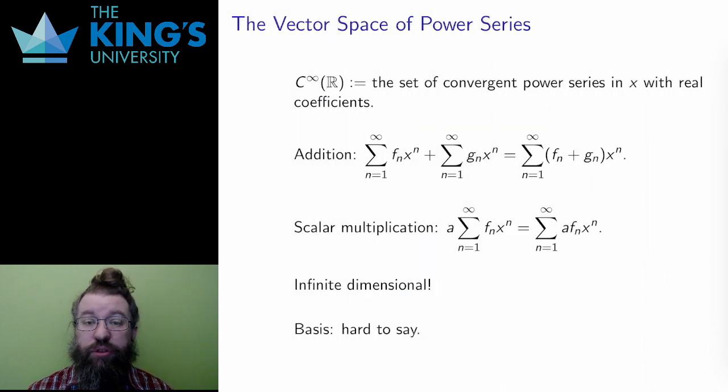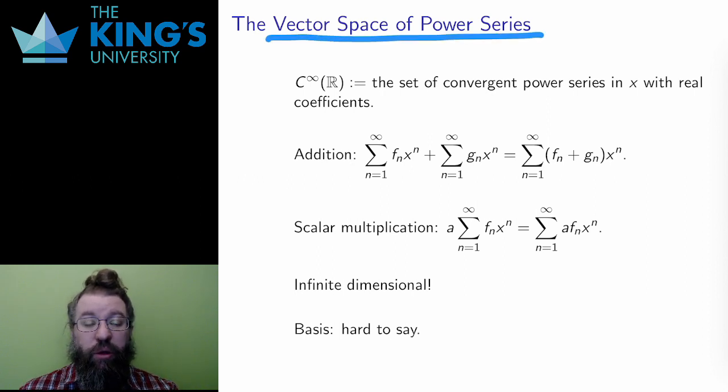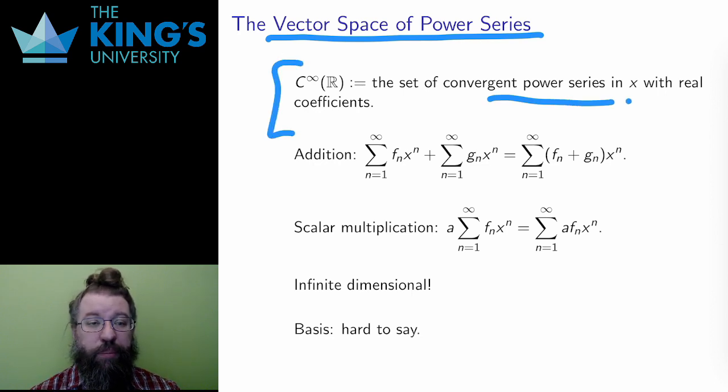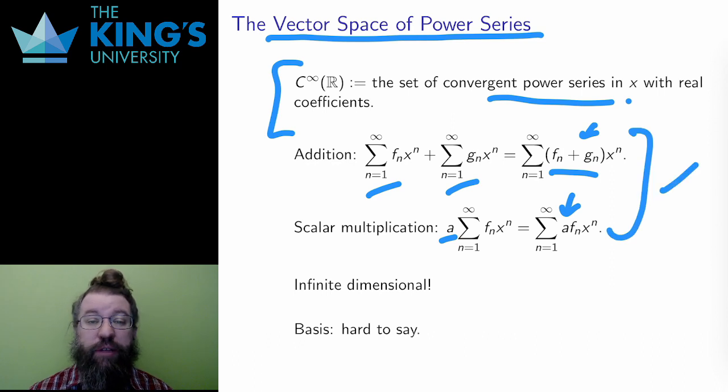I have two more examples for you. Similar to polynomials, I can ask for the set of convergent infinite series in the variable x with real coefficients. This is written c infinity of r, for reasons that I won't talk about now. If I have two convergent series defined for all of r, I can add them up by adding the terms. Likewise, I can multiply a series by a constant, by taking that constant into the series, and this doesn't affect convergence. The distributive law holds for this scalar multiplication over addition. This is an abstract vector space.